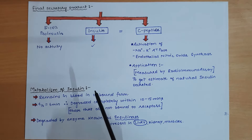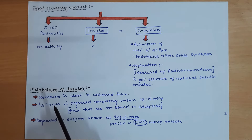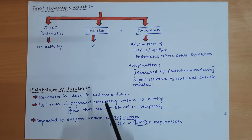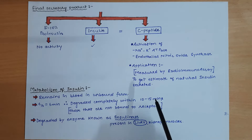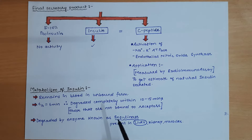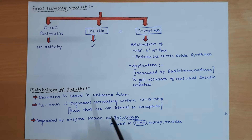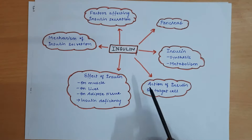Regarding metabolism of insulin: insulin circulates in blood in unbound form and does not bind to plasma proteins. Because of this, its half-life is very short — approximately 6 minutes — and it is completely degraded within 10 to 15 minutes. The enzyme that degrades insulin is called insulinase, which is mainly present in the liver, with small amounts also secreted by the kidney and muscles.